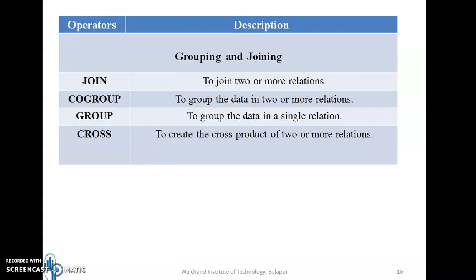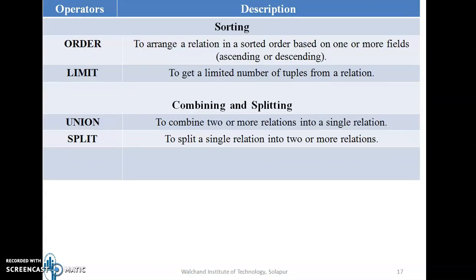The next category of relational operators is grouping and joining, which consists of four operators: join, which performs a join between two or more relations; cogroup, to group data in two or more relations; group, to group data in a single relation; and cross, to create the cross product of two or more relations. The sorting category consists of order and limit operators. Order arranges a relation in sorted order based on one or more fields in ascending or descending order. Limit is used to get a limited number of tuples from a relation.